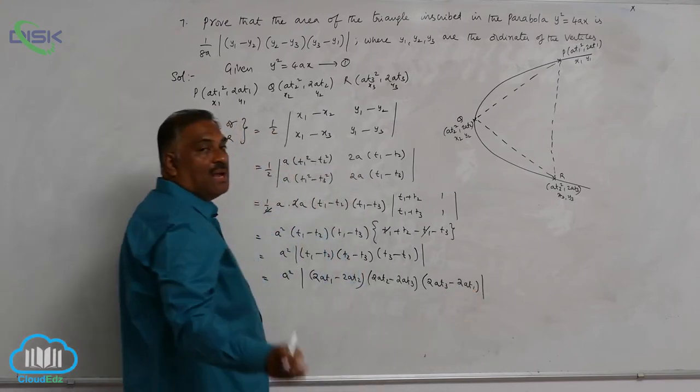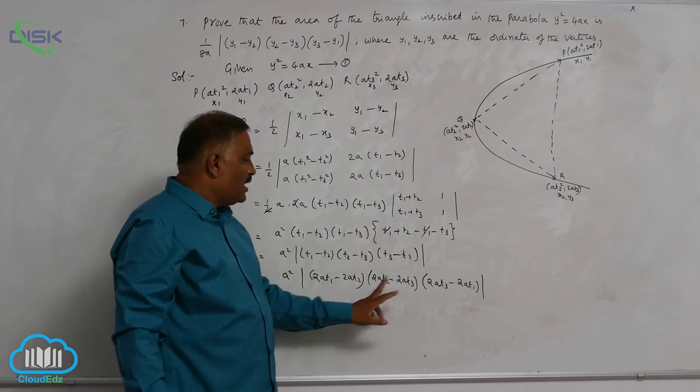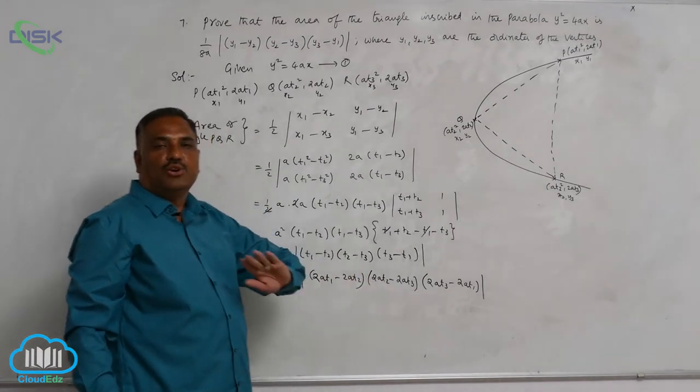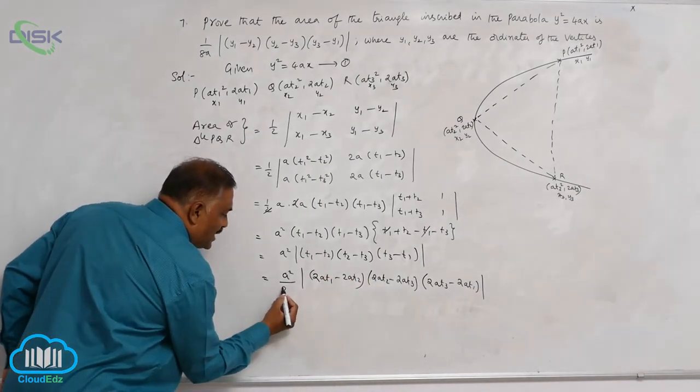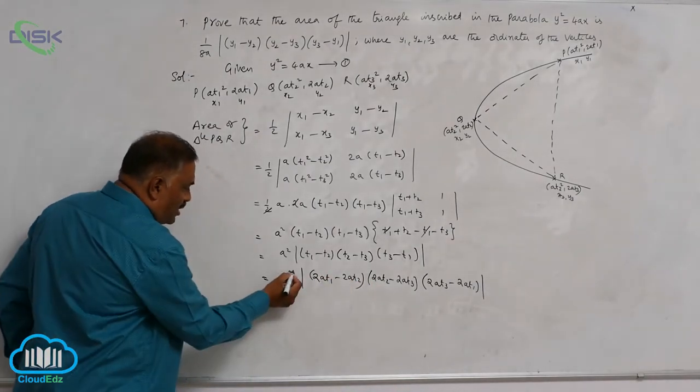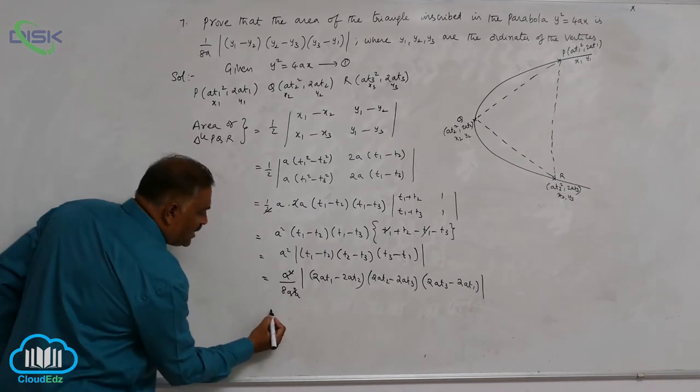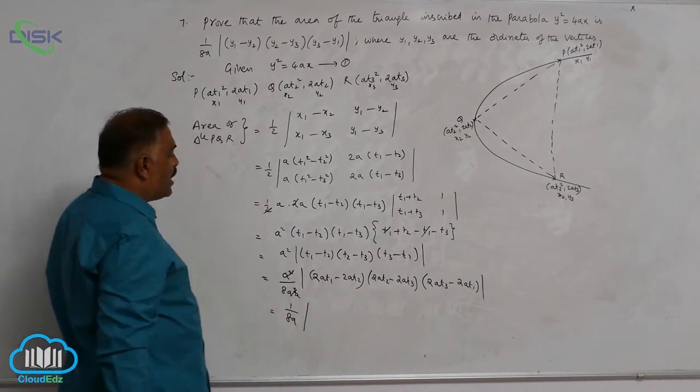That means, I multiplied here 2a, here 2a, here 2a. Together it makes 8a³. So, because I multiplied, I need to divide 8a³. One a² gets cancelled. 1 by 8a into,